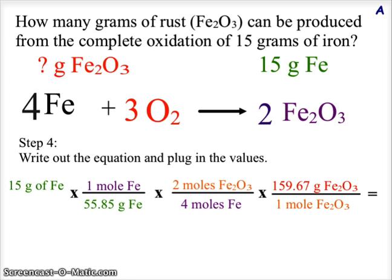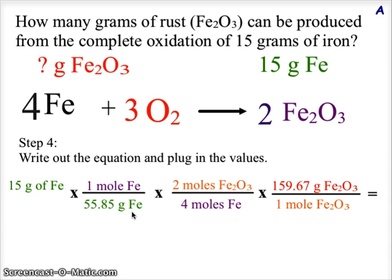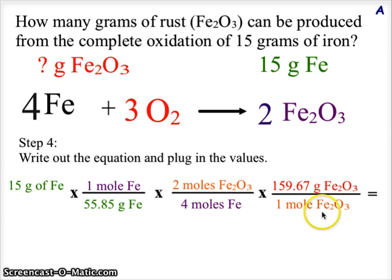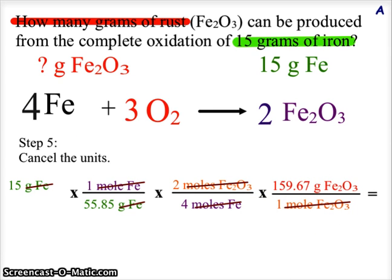So here we have our setup: we start with 15 grams of iron, times one mole of iron over 55.85 grams of iron (from the periodic table), times two moles of rust over four moles of iron — those coefficients come from the balanced chemical equation — times 159.67 grams of rust over one mole. When we cancel units, the only units remaining are grams of rust, which is our stopping point, starting from grams of iron.